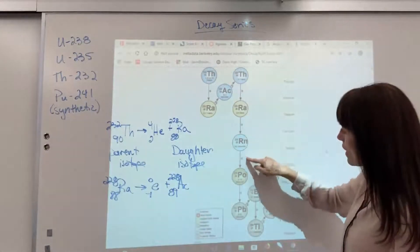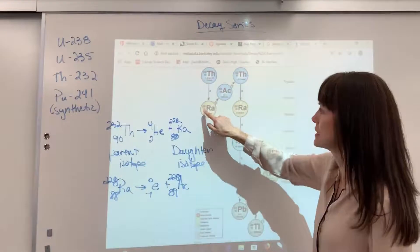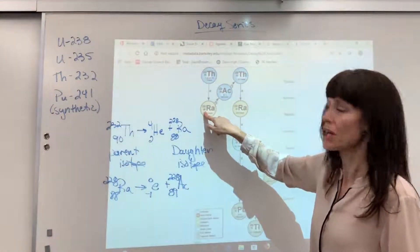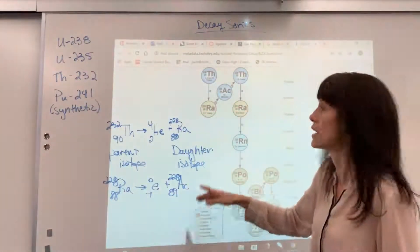Then you can see alpha, alpha, alpha, alpha. Notice that the alpha decay decreases the atomic number, but when you undergo a beta decay, it increases the atomic number.